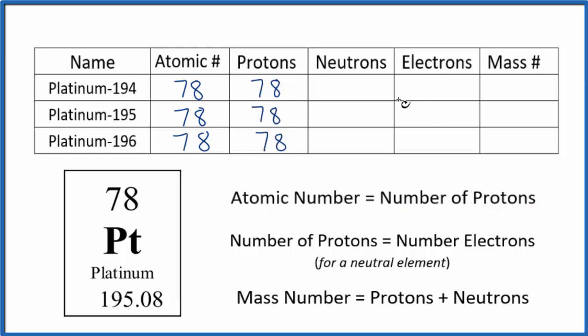Let's skip over the neutrons and talk about electrons. On the periodic table, platinum doesn't have a negative or a positive sign after it. This is a neutral element. So if we have a neutral element, the number of protons equals the number of electrons. So the electrons for each isotope, that's 78.